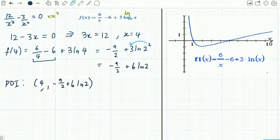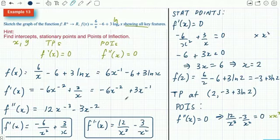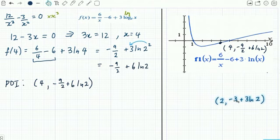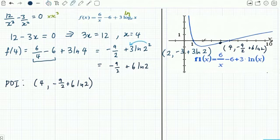We've got the basic shape of the graph. Let's look back at the information we have. We have a point of inflection at x = 4, which is at (4, -9/2 + 6ln(2)). We also had a turning point at (2, -3 + 3ln(2)). So we've got two important parts: the turning point and the point of inflection.